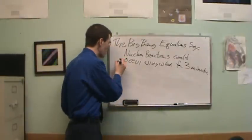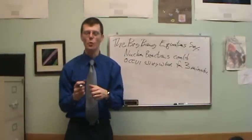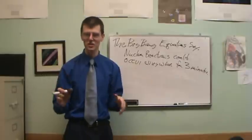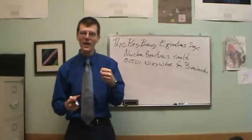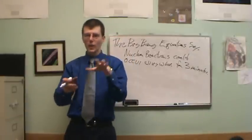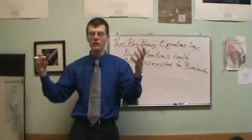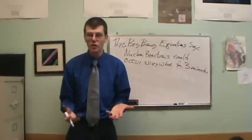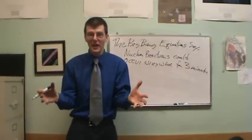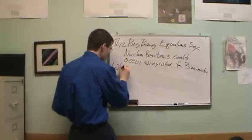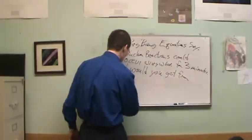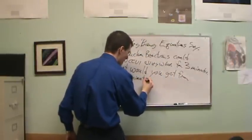Here's the key idea. The Big Bang equations say that nuclear reactions could occur everywhere for three minutes. What are they going to make? We have equations for nuclear fusions. The guys down in Los Alamos, the bomb people, they know all about nuclear reactions. So we astronomers can use that. We can take the temperature and density, it starts out really hot and really dense, and then these decrease for three minutes. We can take the Big Bang temperature and density stuff, put them together with nuclear fusion stuff, and say, what do you get? What would you get from three minutes of fusion?